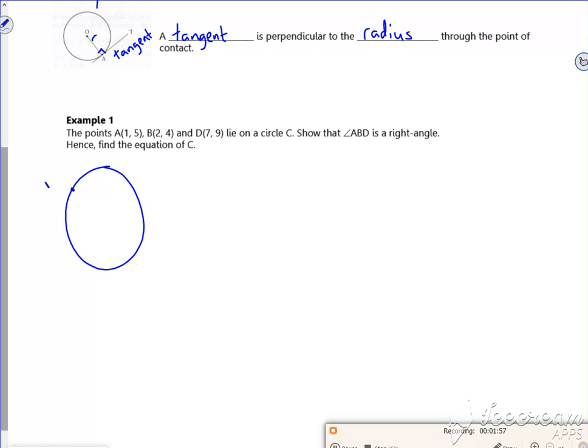So A is 1, 5. This is a dodgy looking circle, it needs to be a better circle really. B is 2, 4. Now it tells you that B is the right angle. So that's got to be the right angle. And then D is 7, 9. You'll be able to draw a nicer picture than me.